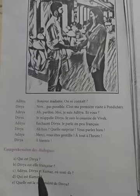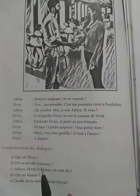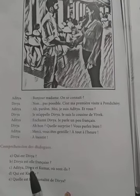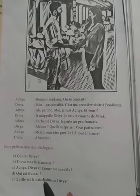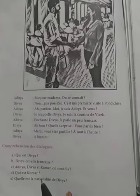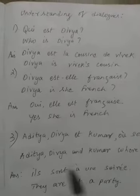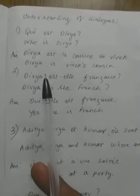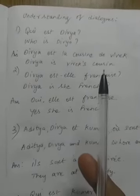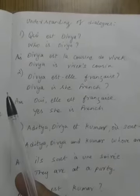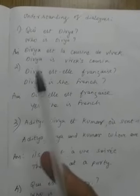Based on the two dialogues, the first question: 'Qui est Divya?' — Qui means 'who'. So the question is: who is Divya? This is from the first dialogue. They ask this question: who is Divya? Divya is Vivek's cousin.